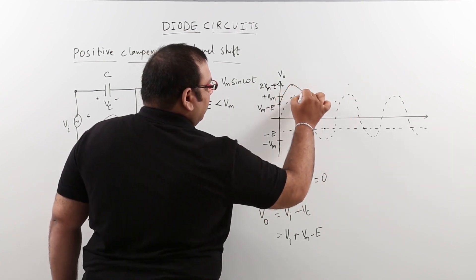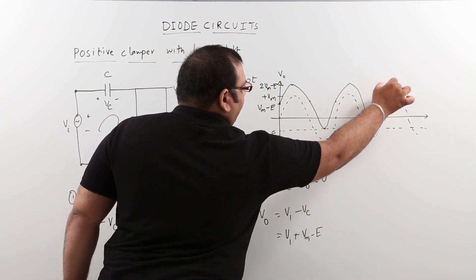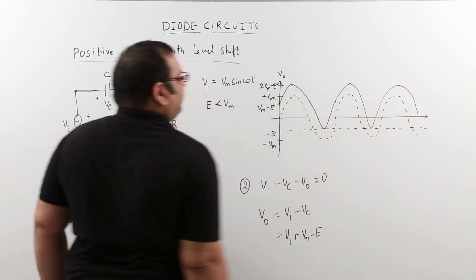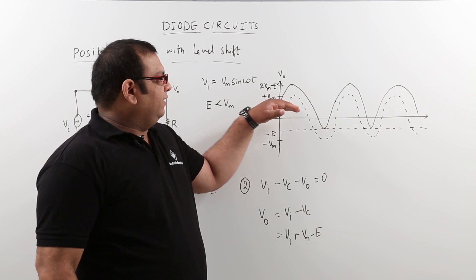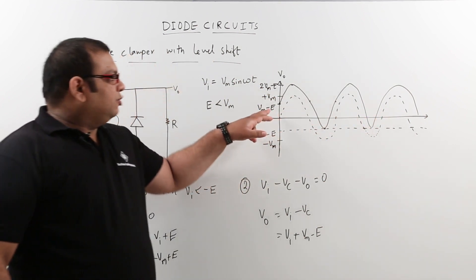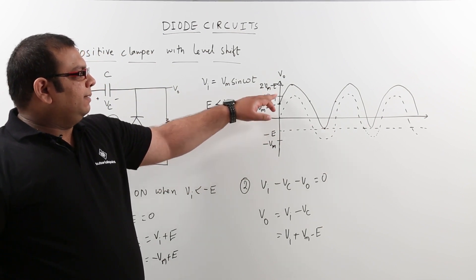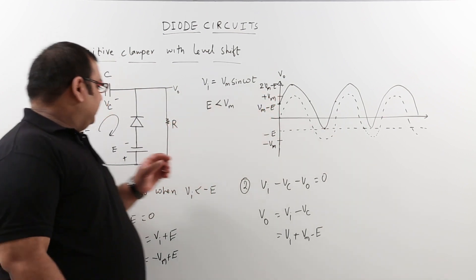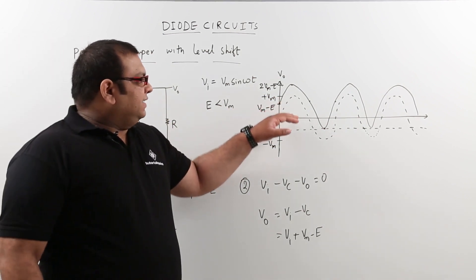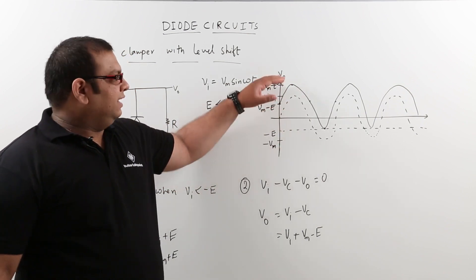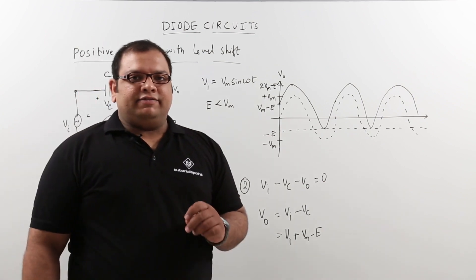This is how the output waveform looks. The DC level is shifted to Vm minus E. By changing the value of E, we can shift the DC level of the waveform. If E equals 0, this becomes the same as the previous circuit. So by varying E, we shift the DC level — this is the positive clamper with the level shifter.